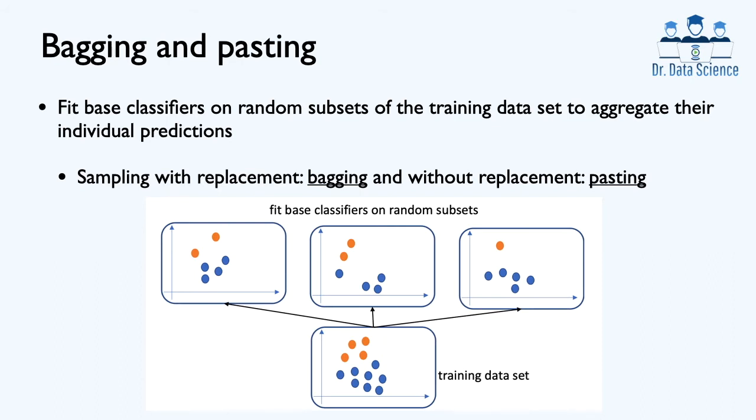In terms of terminology, if we do sampling with replacement, it is called bagging. And if we do sampling without replacement, it is called pasting. It's a very simple idea that has been very useful for many machine learning problems.